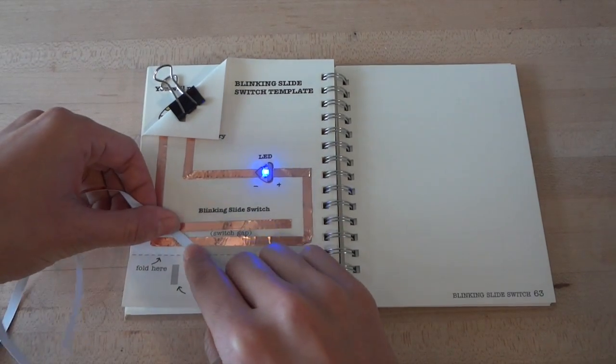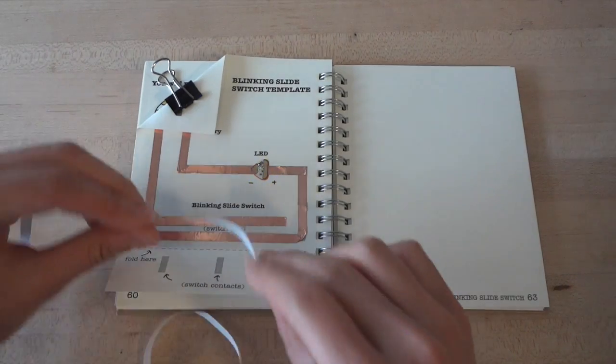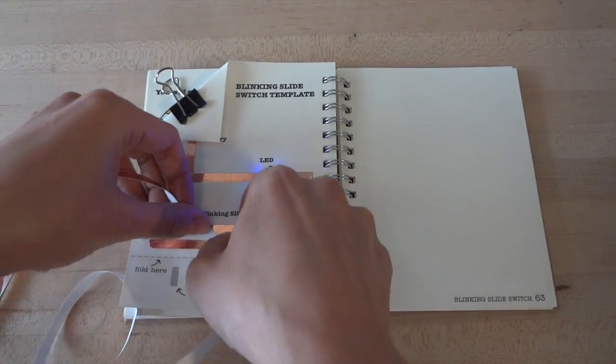Now you can use your conductive foil to bridge anywhere along the gap to turn on your LED light. We can use this to create a blinking pattern by putting down copper tapes at specific points along the gap.